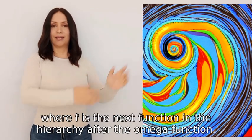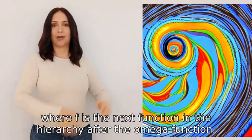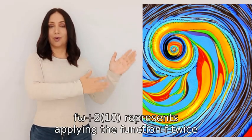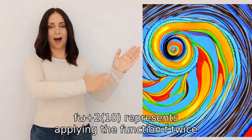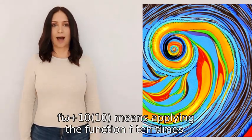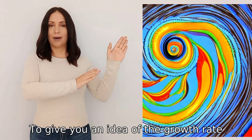Similarly, f(ω+2) represents applying the function f twice. f(ω+10) means applying the function f ten times to give you an idea of the growth rate.